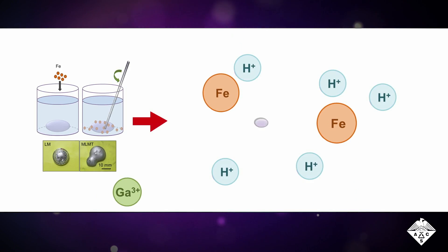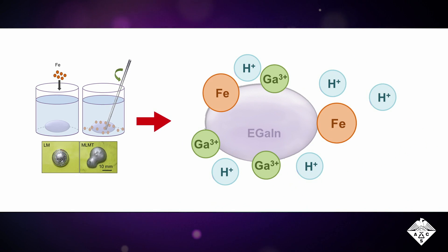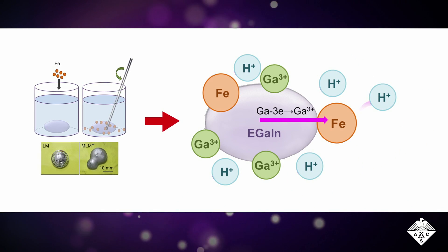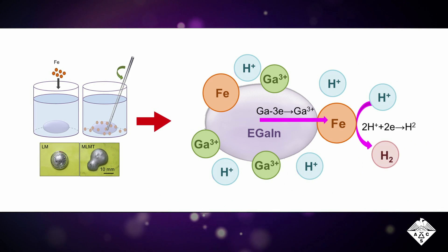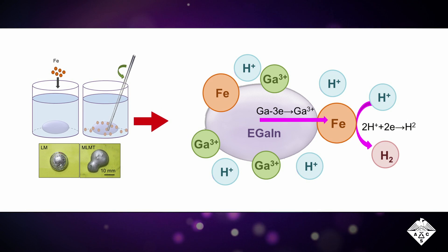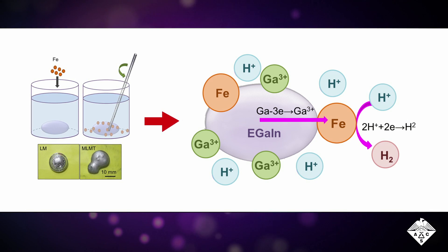They added iron particles to a droplet of gallium, indium, and tin alloy immersed in hydrochloric acid. A gallium oxide layer formed on the droplet surface, which lowered the surface tension of the liquid metal.